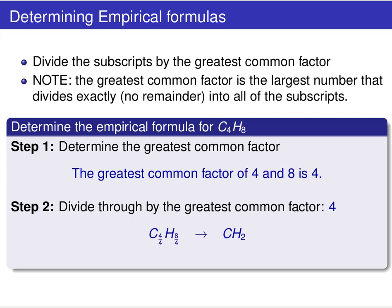So if you want to determine the empirical formula and you already know the molecular formula, then all you have to do is divide the subscripts by the greatest common factor. And what I mean by the greatest common factor, it's the largest number that divides exactly with no remainder into all of the subscripts. So for example, if I want to determine the empirical formula for C4H8, we need to identify what is the greatest common factor? What's the largest number that divides both of these subscripts, 4 and 8, with no remainder? Well, of course, the greatest common factor is 4. So we're going to divide both those subscripts by 4 and we will come out the other end with an empirical formula of CH2.